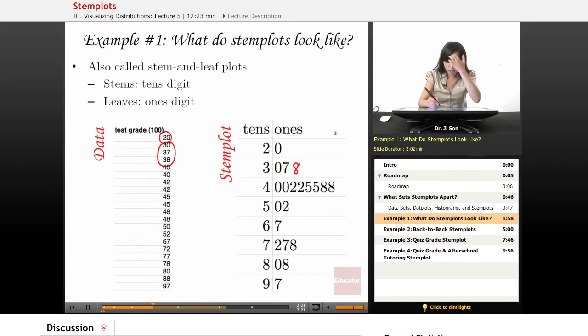Now let's look at all those people who scored in the 40s, which looks like this is the majority. So I would put the zero, the zero, the two, the two, the five, the five, the eight, and the eight. And then let's look at those who scored in the 50s. There's one person who scored 50 and one person who scored at 52. And then 67. So I put the six here and the seven here.